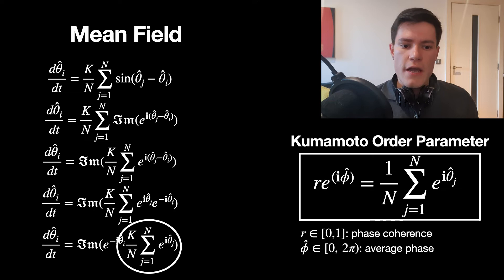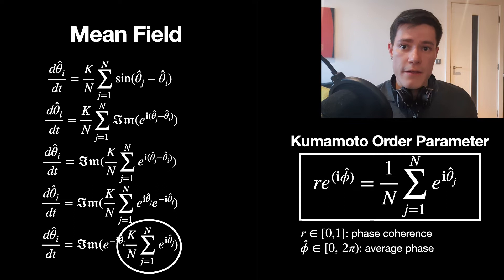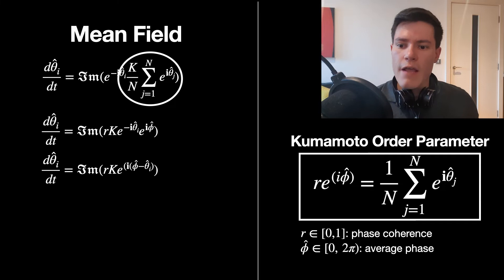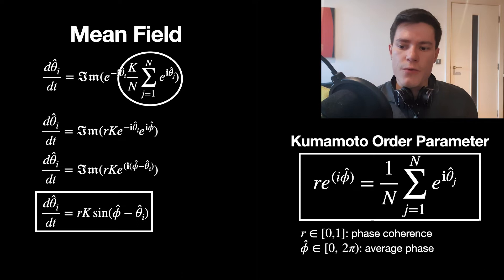We name this the Kuramoto order parameter: R times e raised to i phi equals that sum, where R is the phase coherence (zero to one) — the length of the blue line seen earlier — and phi is the average phase. Returning to the equation, d theta i / dt equals the imaginary part of R times K times e to the negative i theta i times e to the i phi. Finally, we get d theta i / dt equals R times K times sine of (phi minus theta i). This is a mean field because all nodes receive the same information from R and phi.